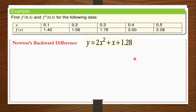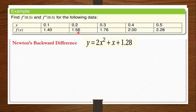We've been given the following data and we are supposed to compute the first and second derivative at 0.5. This is the data that we've been given, and this is the equation from which this data was derived.